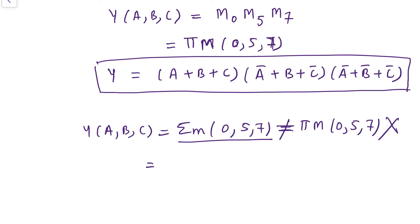Both standard forms are the dual of each other. The terms that are min terms can never be max terms, and vice versa. If a Boolean expression is given as a sum of min terms m(0,1,5), it cannot be equated to the same set as max terms — that would be completely wrong. To express it as max terms, the remaining terms (those not listed as min terms) are the max terms. Any expression given in product of sums but not in standard form can also be converted to standard form, which I will discuss in the next video.